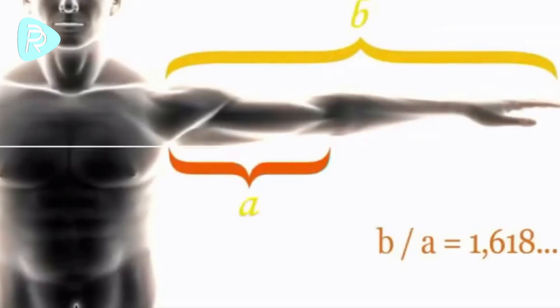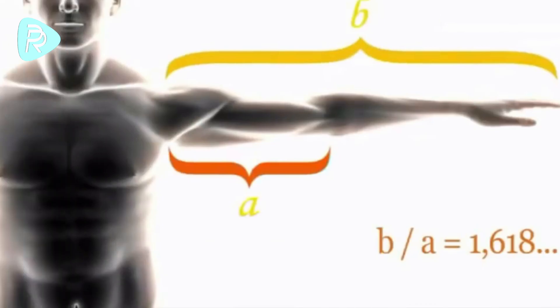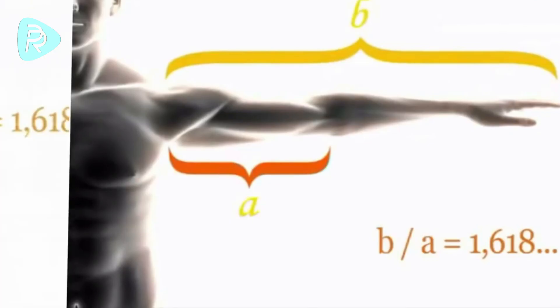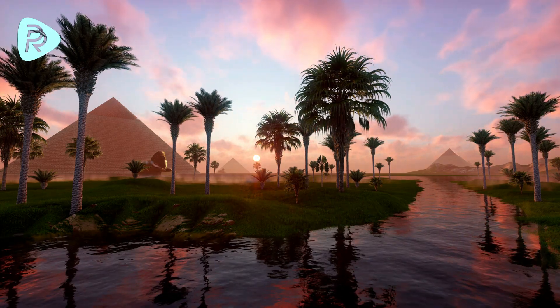All these aesthetic proportions reveal a creational secret: the golden ratio. Now let's move on to the human body. When we look at our arms, we see they are divided into two parts by our elbows — a big part and a small part. The ratio of the smaller part to the bigger one gives us the golden ratio, and the ratio of the bigger part to the whole arm gives us the golden ratio too.